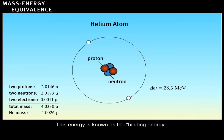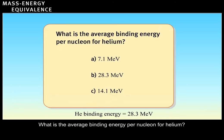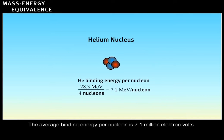This energy is known as the binding energy. What is the average binding energy per nucleon for helium? Correct. The average binding energy per nucleon is 7.1 million electron volts.